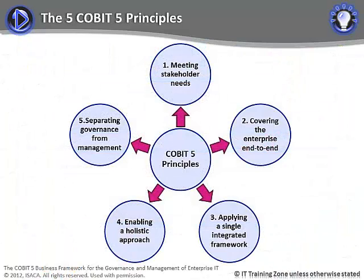The diagram on your screen shows the five key principles that CoBIT-5 identifies as being key to the successful governance and management of enterprise IT. The five principles are: meeting stakeholder needs, covering the enterprise end-to-end, applying a single integrated framework, enabling a single holistic approach, and separating governance from management. You will need to remember these for your exam.